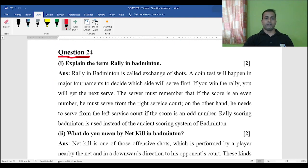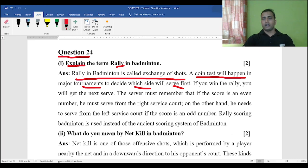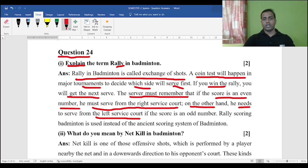Now coming to the next question, Question number 24. The first one is: Explain the term rally in badminton. This is very common for everybody who is studying badminton. Rally in badminton is called exchange of shots. A coin toss will happen in major tournaments to decide which side will serve first. If you win the rally, you will get the next serve. The server must remember that if the score is an even number, he must serve from the right side of the court. On the other hand, he needs to serve from the left side court if the score is an odd number. Rally scoring in badminton is used instead of the ancient scoring system.